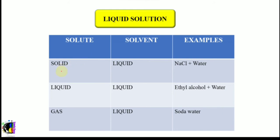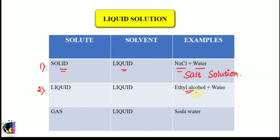Moving on to liquid solutions. The first combination is solid plus liquid — the solute is solid and the solvent is liquid. The example is NaCl plus water, that is sodium chloride plus water, or common salt plus water, giving a salt solution. The second combination is liquid plus liquid — both solute and solvent are liquid. The example is ethyl alcohol plus water. Ethyl alcohol, also called ethanol, when mixed with water gives a solution. The chemical formula for ethyl alcohol is C2H5OH and for water is H2O.